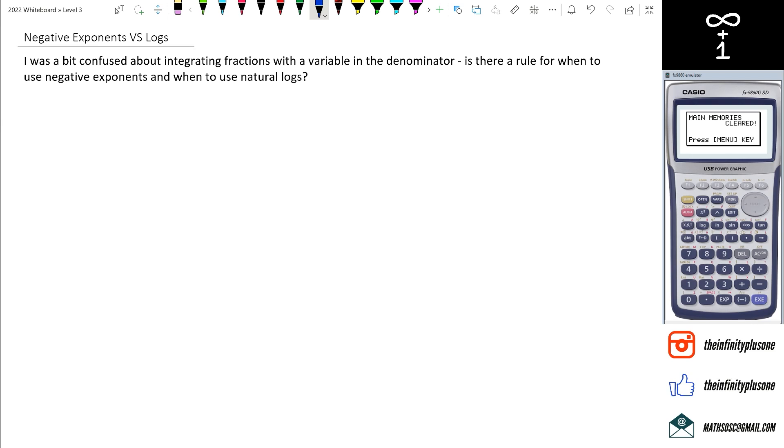For example, if I have integral of 1 over x cubed, I know that in this case I've got to actually put this as a negative exponent before actually integrating it. However, if I have something like 7 over x dx, I know that if I actually put this as x to the power of negative 1, then what's going to happen is when you add plus 1 the new power is 0 and it's going to get messy.